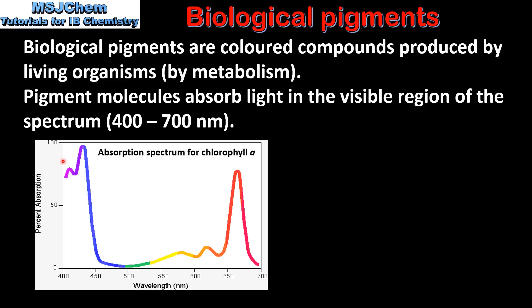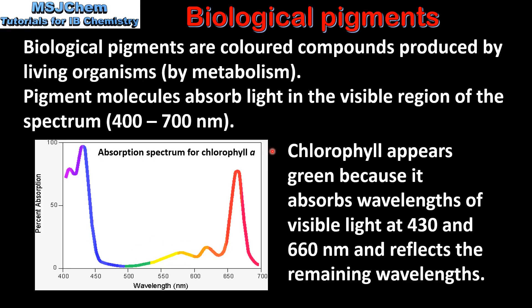Here we have an absorption spectrum for chlorophyll. Chlorophyll is a biological pigment that can be found in the cells of a plant. By looking at the spectrum we can see that certain wavelengths of visible light are being absorbed and certain wavelengths are being reflected. Chlorophyll appears green because it absorbs wavelengths of visible light at 430 and 660 nanometers and reflects the remaining wavelengths.